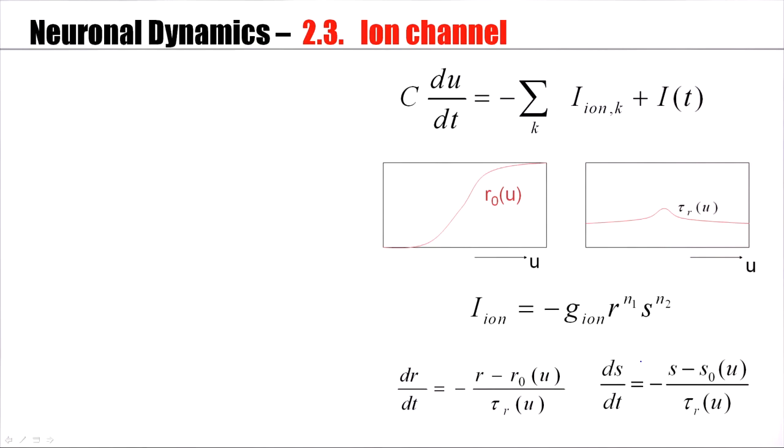Let's call them R and S. These gating variables will be described by a linear differential equation, which is coupled to the voltage. An activation variable is one which increases with the voltage. An inactivation variable would be the other way around. For example, this could be S0 of U, with some time constant, tau_S of U.